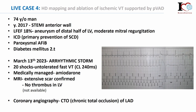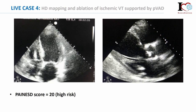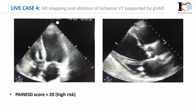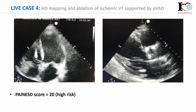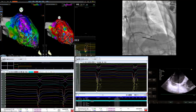He got an ICD as primary prevention but this week he got VT storming with about 20 appropriate discharges. The VT was very fast at cycle length 240 milliseconds. Right now we are running the tandem with minimum support. We introduced all catheters with a second transseptal, because the tandem needs one inflow cannula in the left atrium, and compared to Impella we have no other catheter in the left ventricle body.